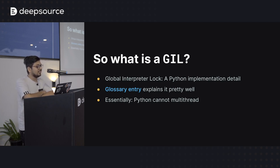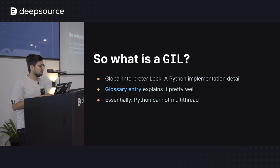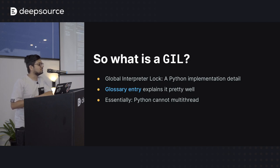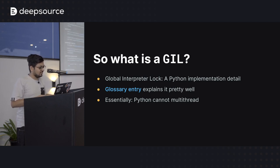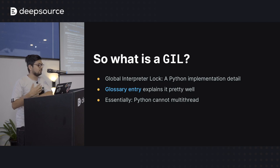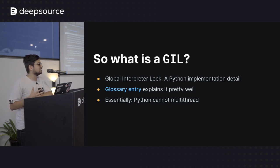So what exactly is the GIL? It stands for the Global Interpreter Lock, and it's somewhat of an implementation detail of Python. The definition is a bit long-winded, so I'll open the glossary page — Python has a really nice glossary page, by the way. The Global Interpreter Lock is the mechanism used by the CPython interpreter to assure that only one thread executes Python bytecode at a time. It simplifies the CPython implementation by making the object model implicitly safe against concurrent access.